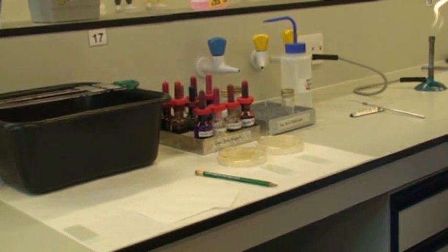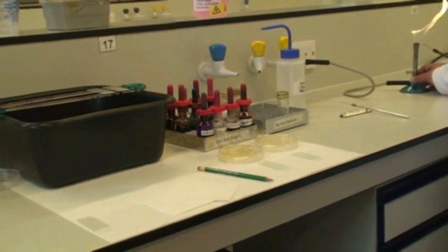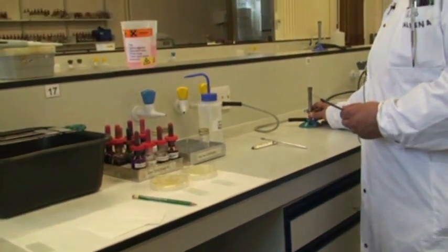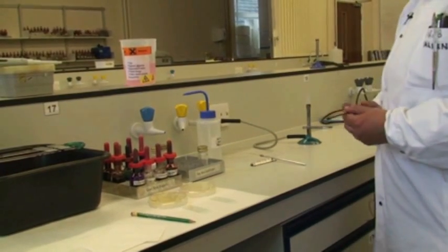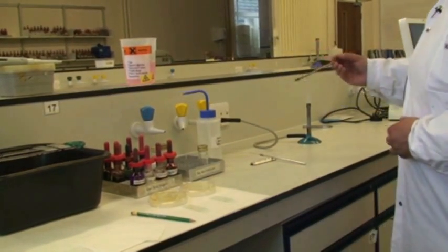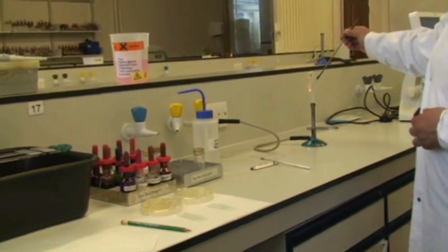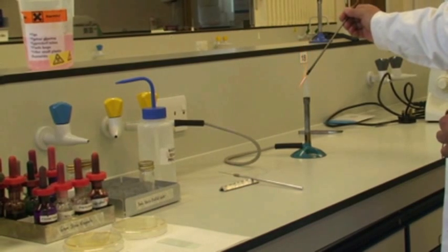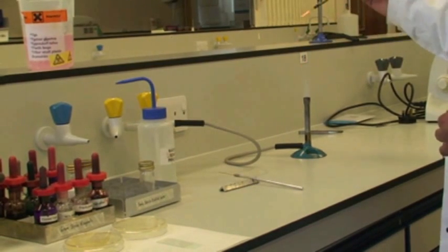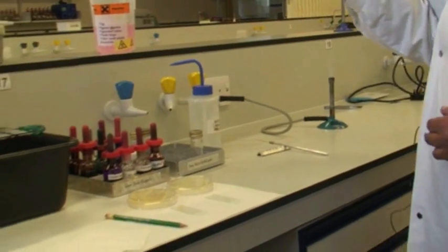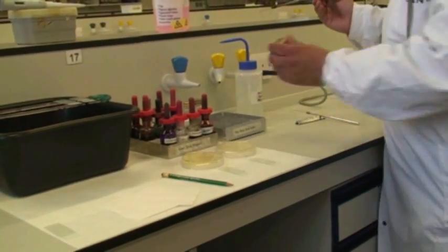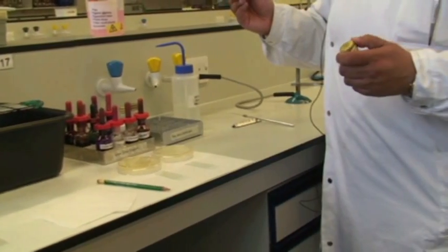In order to do the Gram stain, what we need to do first of all is turn the Bunsen again to the hottest part of the flame. Sterilize your bacteriological loop until it's red hot, and then use that sterile bacteriological loop to take a loopful of distilled water.